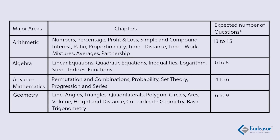These five sections are: Arithmetic, Algebra, Advanced Mathematics, and Geometry. As you can see in the table, Arithmetic comprises numbers, percentage, profit and loss, SI/CI, proportionality, time-speed-distance, mixture and allegation, average, and partnership. Algebra comprises linear and quadratic equations, surds and indices, and functions. Advanced Mathematics covers permutation and combination (P&C) and probability. Geometry includes coordinate geometry and basic trigonometry.